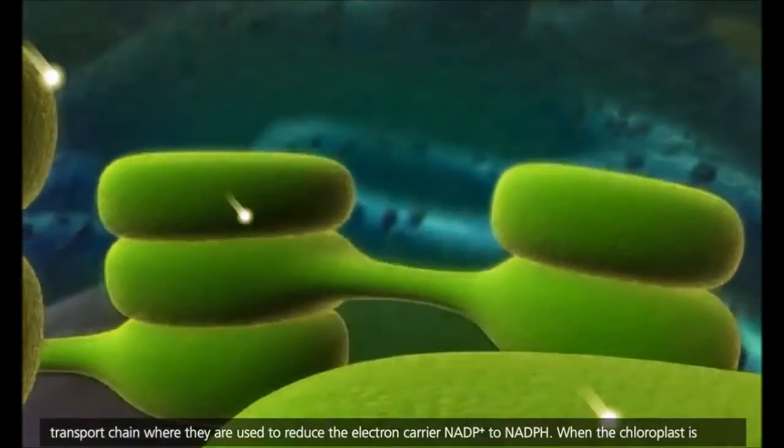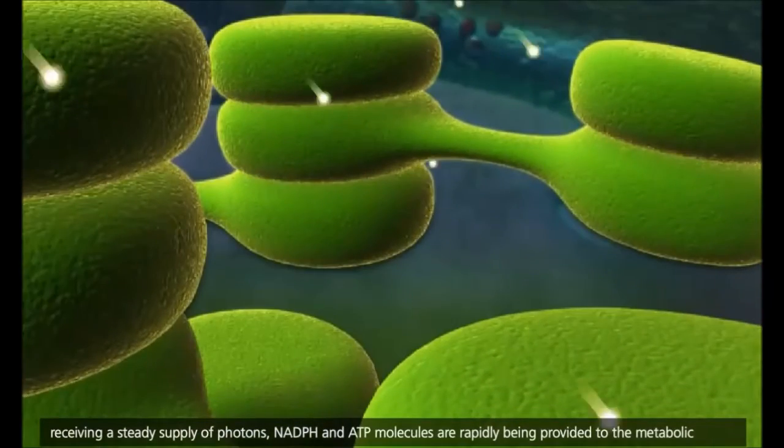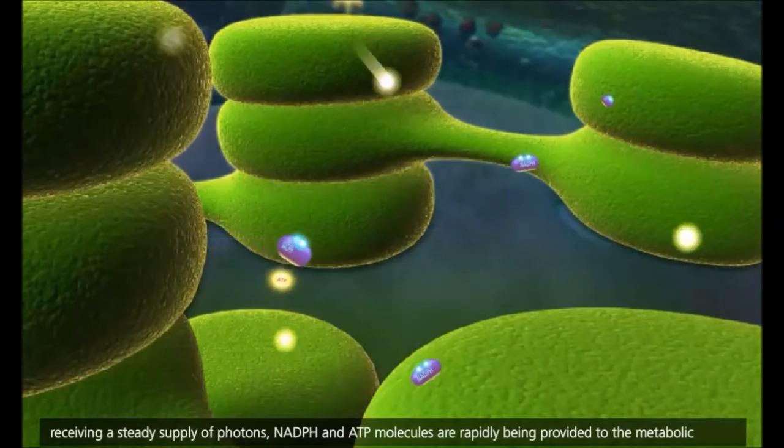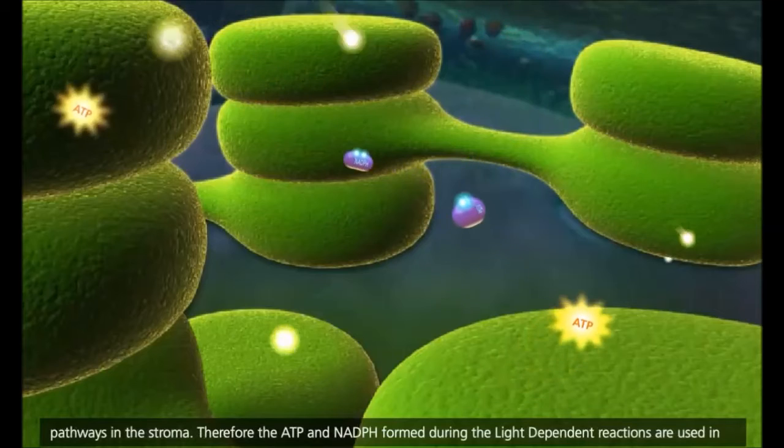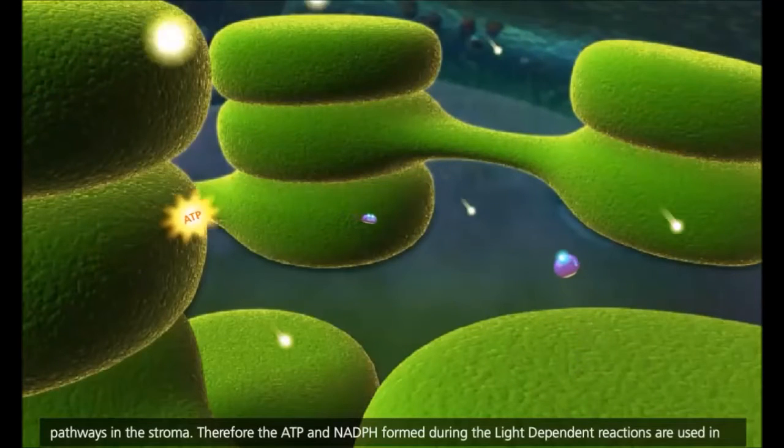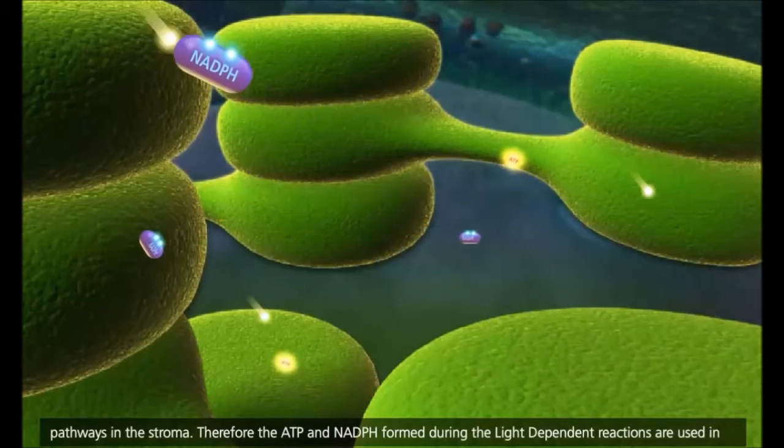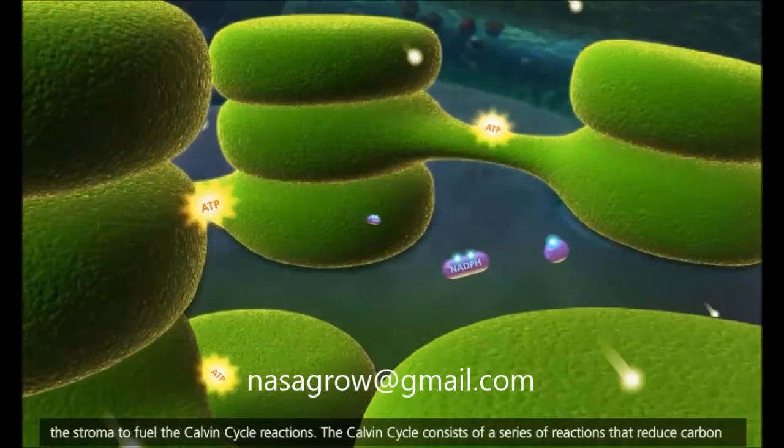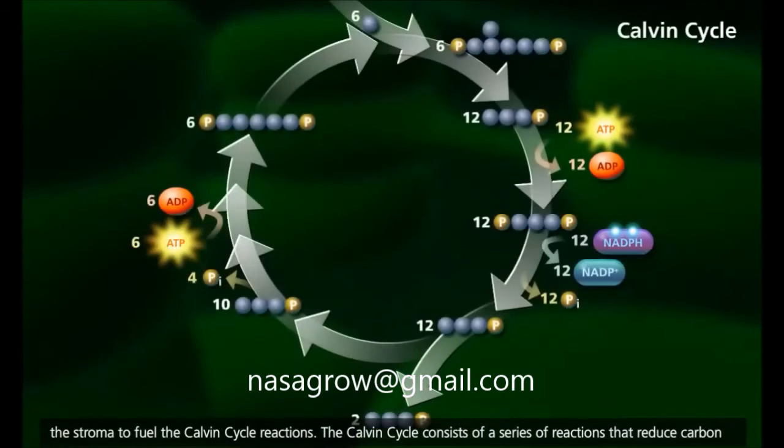When the chloroplast is receiving a steady supply of photons, NADPH and ATP molecules are rapidly being provided to the metabolic pathways in the stroma. Therefore, the ATP and NADPH formed during the light-dependent reactions are used in the stroma to fuel the Calvin cycle reactions.